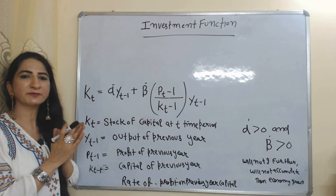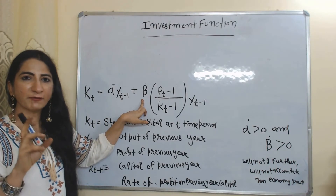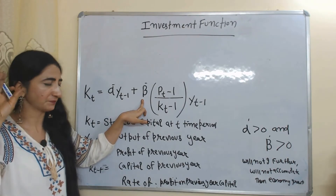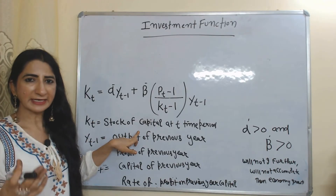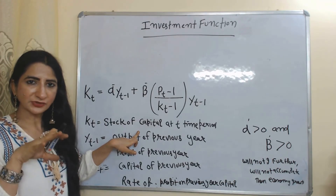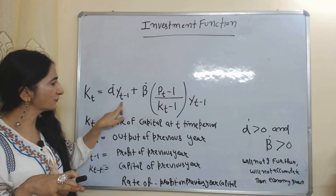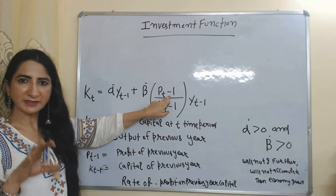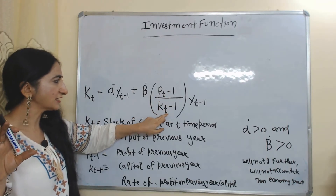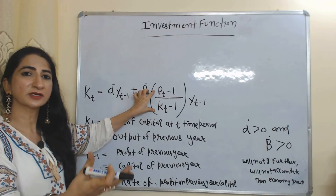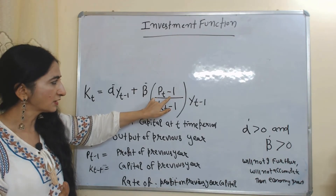Now we'll see the investment function. In this equation, alpha and beta are used but their meanings are completely different. KT means the current stock of capital at time period t. YT minus 1 is the previous year's output, and alpha-dash is the coefficient of previous year's output. PT minus 1 is the previous year's profit. KT minus 1 is the previous year's capital. PT minus 1 over KT minus 1 mainly represents the rate of profit on the previous year's capital.